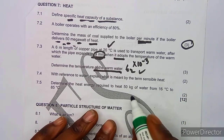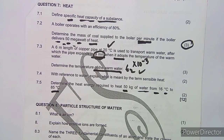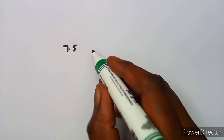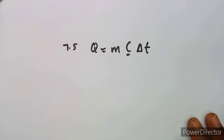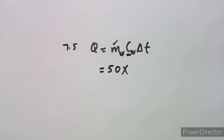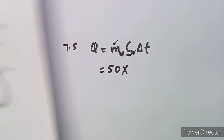Question 7.5: Determine the heat energy required to heat 50 kg of water from 16 degrees to 85 degrees Celsius. We need to find the energy Q. The formula is Q equals mass times specific heat capacity times the change in temperature. The mass is 50 kg, and the specific heat capacity of water is 4187 J/kg°C.